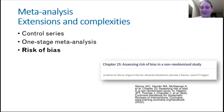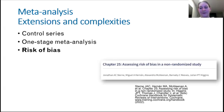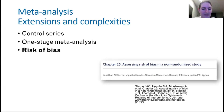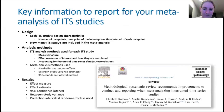We haven't spoken much about sources of bias that ITS studies are susceptible to. The Cochrane Handbook has a section in chapter 25 that outlines these. In terms of tools, there isn't anything specific for ITS, but the RobinsI tool is currently being expanded to include an extension for ITS — for uncontrolled and controlled before-after studies.